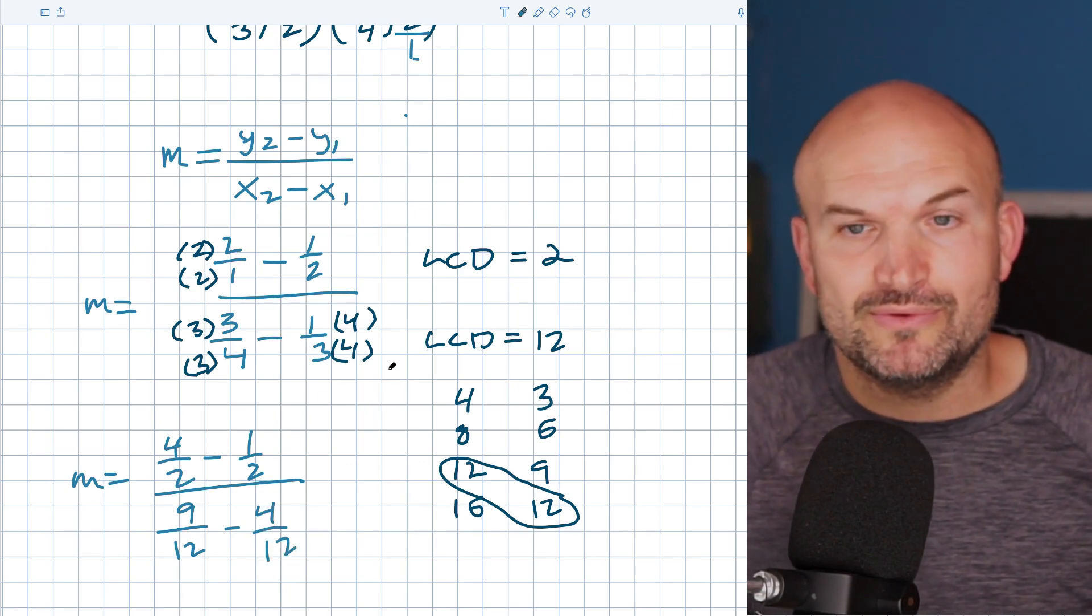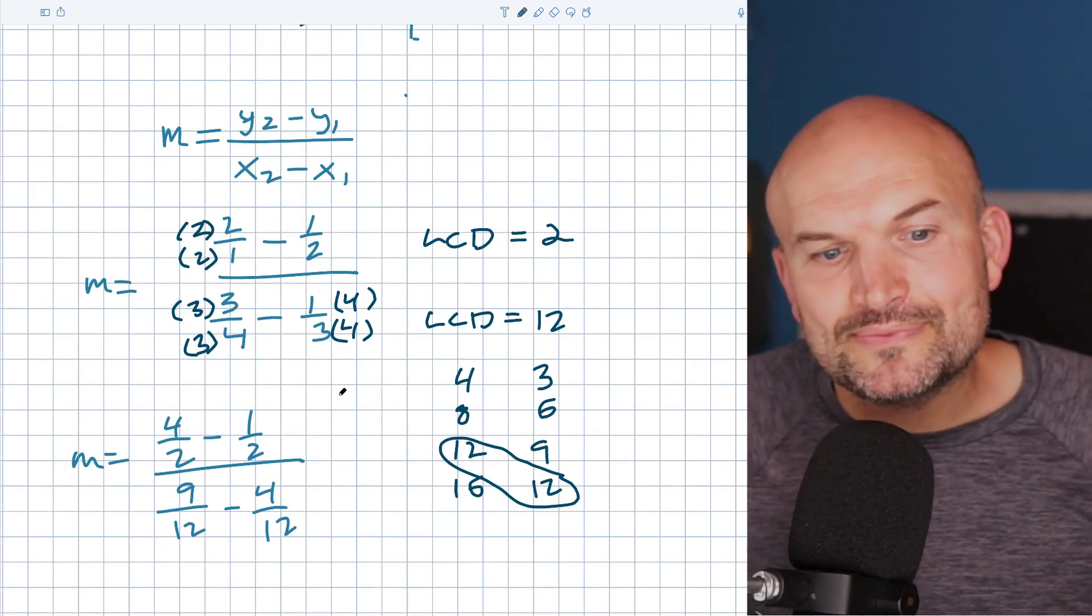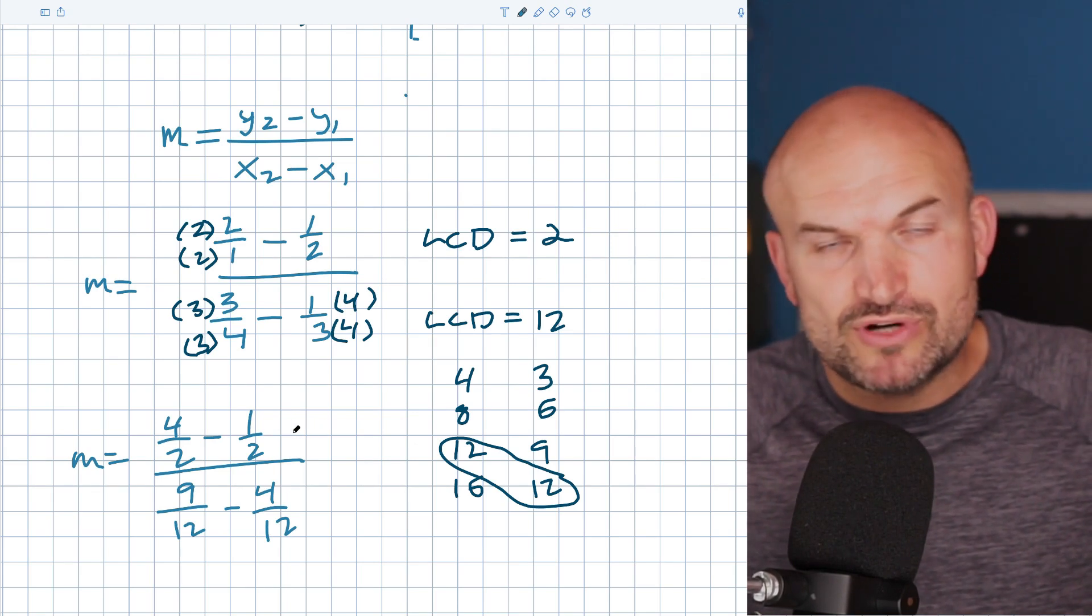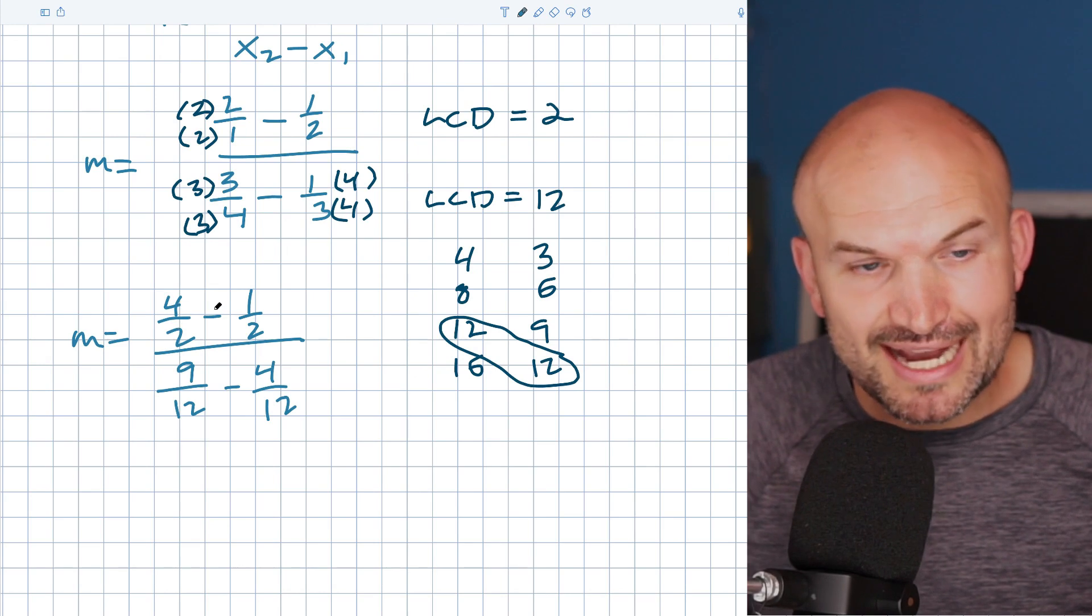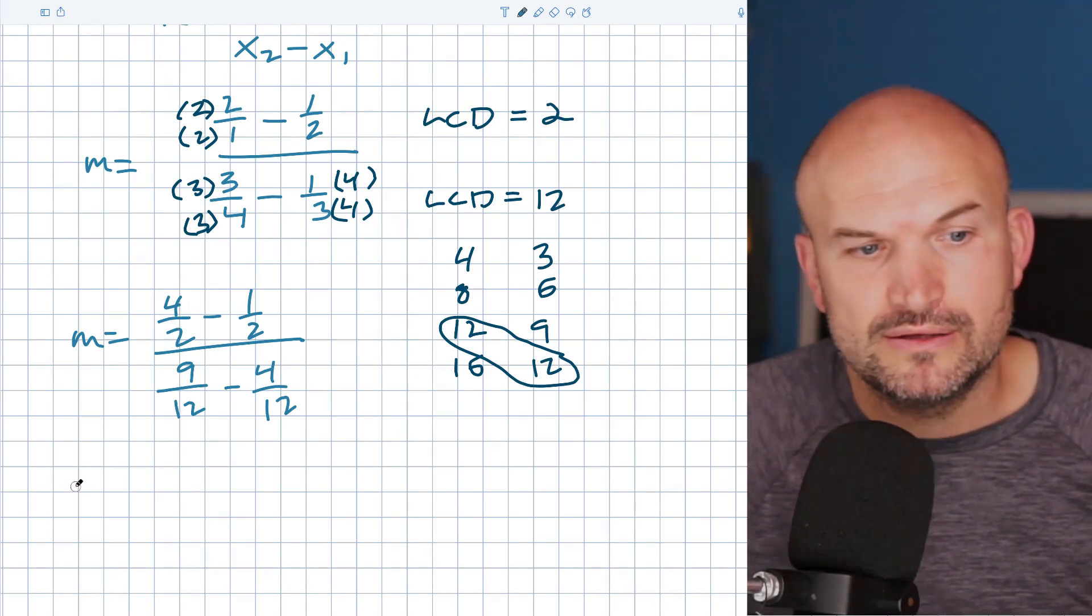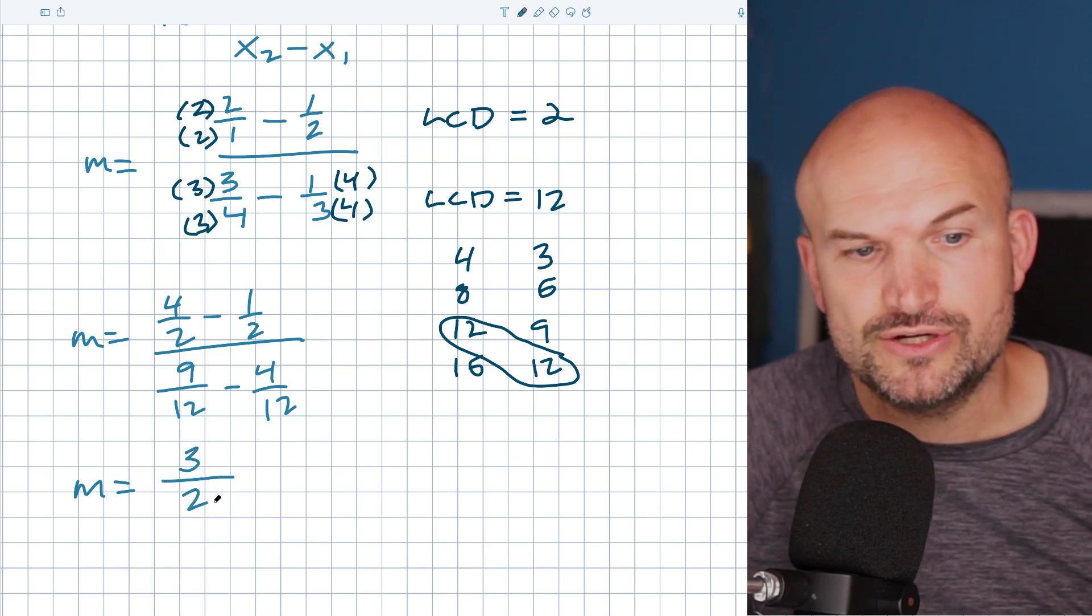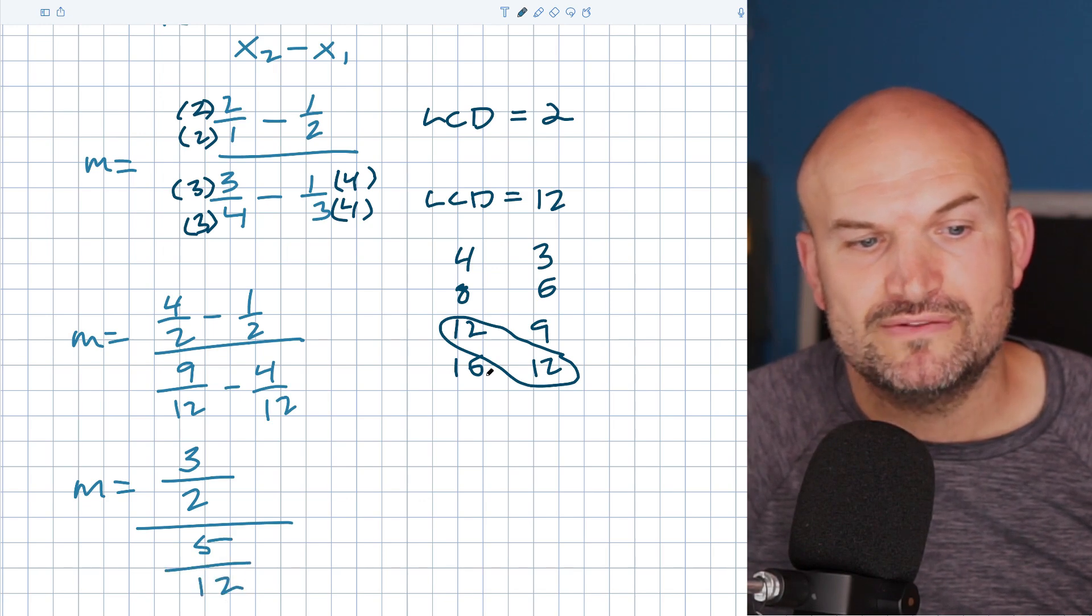So remember that original problem I was talking about? Like when you're subtracting your fractions. Remember whenever your denominators are the same guys, you can just subtract your numerators. Like that's what you get. So in this case, I can just now subtract a 4 minus 1. So m equals a 4 minus 1, which is going to be a 3. And then that's over 2. And then in this case, I have a 9 minus 4, which is going to be a 5 divided by 12.